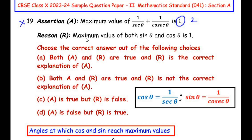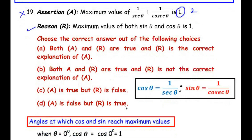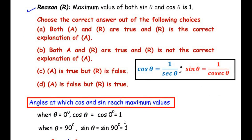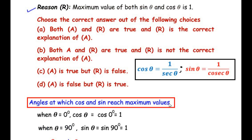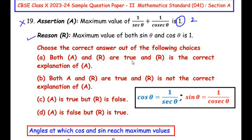Now let us look at the reasoning. The maximum value of both sinθ and cosθ is 1. This is true, as we just saw that their maximum values are 1. So in this case we have an assertion which is false and a reason which is true. We are going to mark option D: the assertion is false but the reason is true.